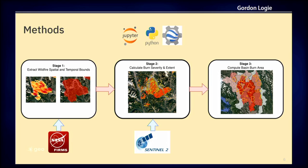To talk very briefly about our system, the process is carried out in three stages. In the first stage, we use coarse-resolution NASA FIRMS data to compute polygons, like you see here, which can give the rough extent and timing of our fires. We then take those polygons and use them to query Sentinel-2 data, retrieving before and after imagery for the fire to calculate fire severity and extent. In the last stage, we take our burn severity data and intersect it with river basin geometry to calculate the burn area for each basin.